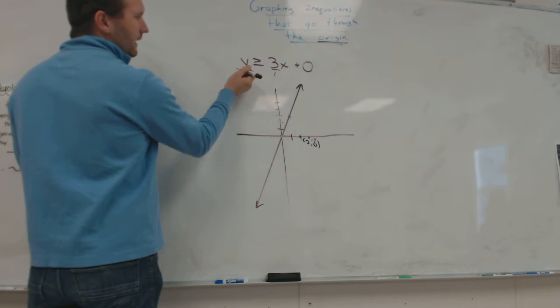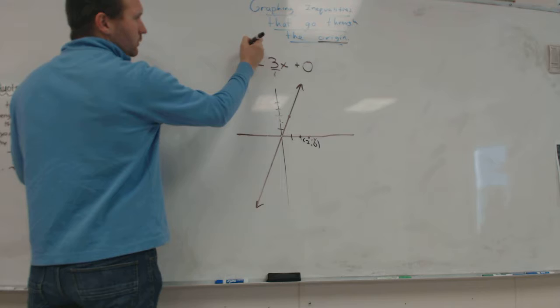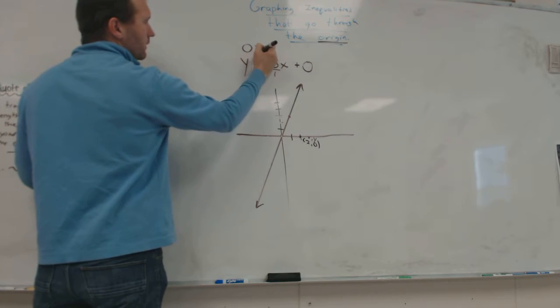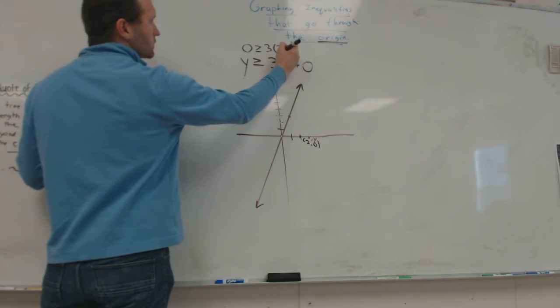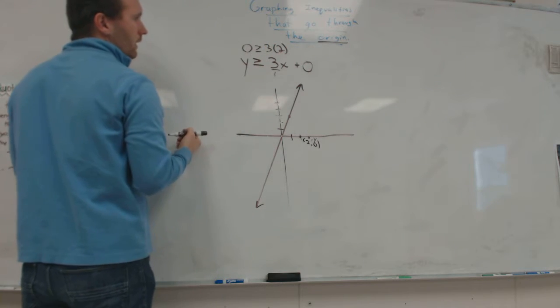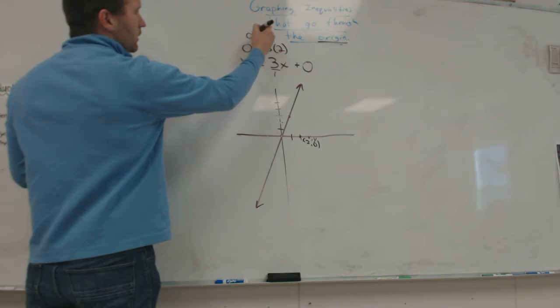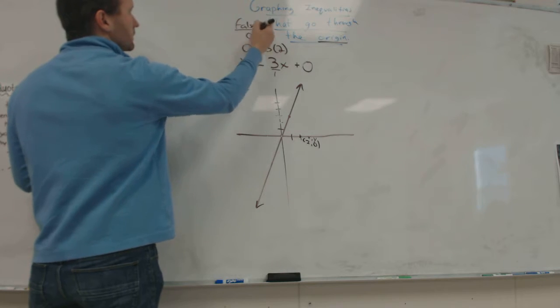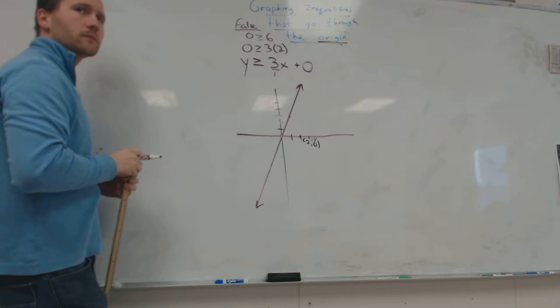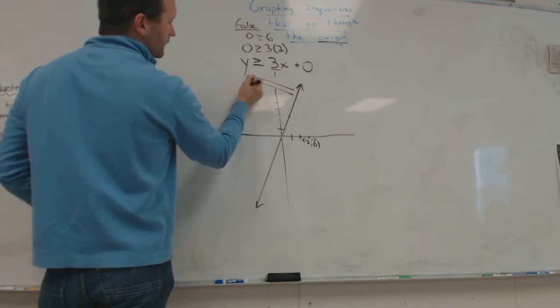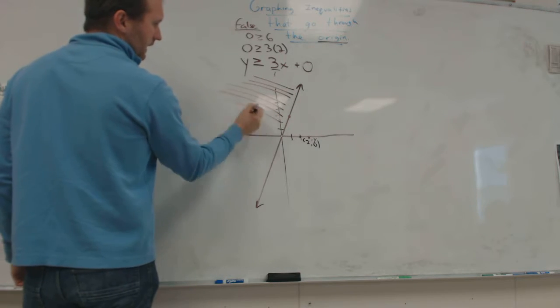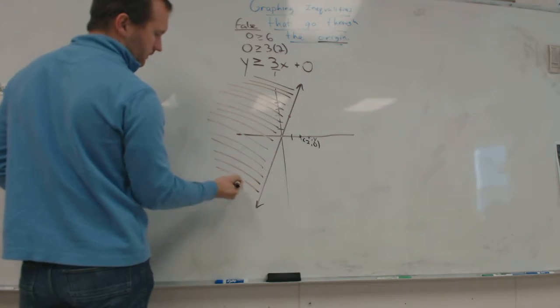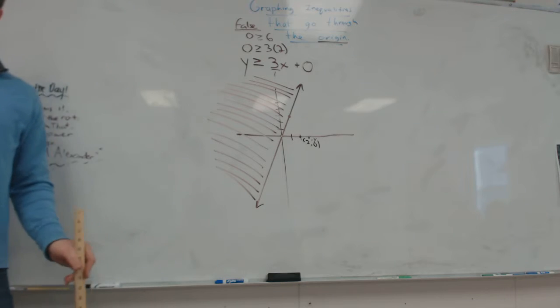So then when we plug that in, I'm going to write this as 0 is greater than or equal to 3 times 2. And then I want to know, is that true? Is 0 greater than or equal to 6? False. Yes. So false means we shade on the opposite side from where that point is. And then you're done. You've graphed it.